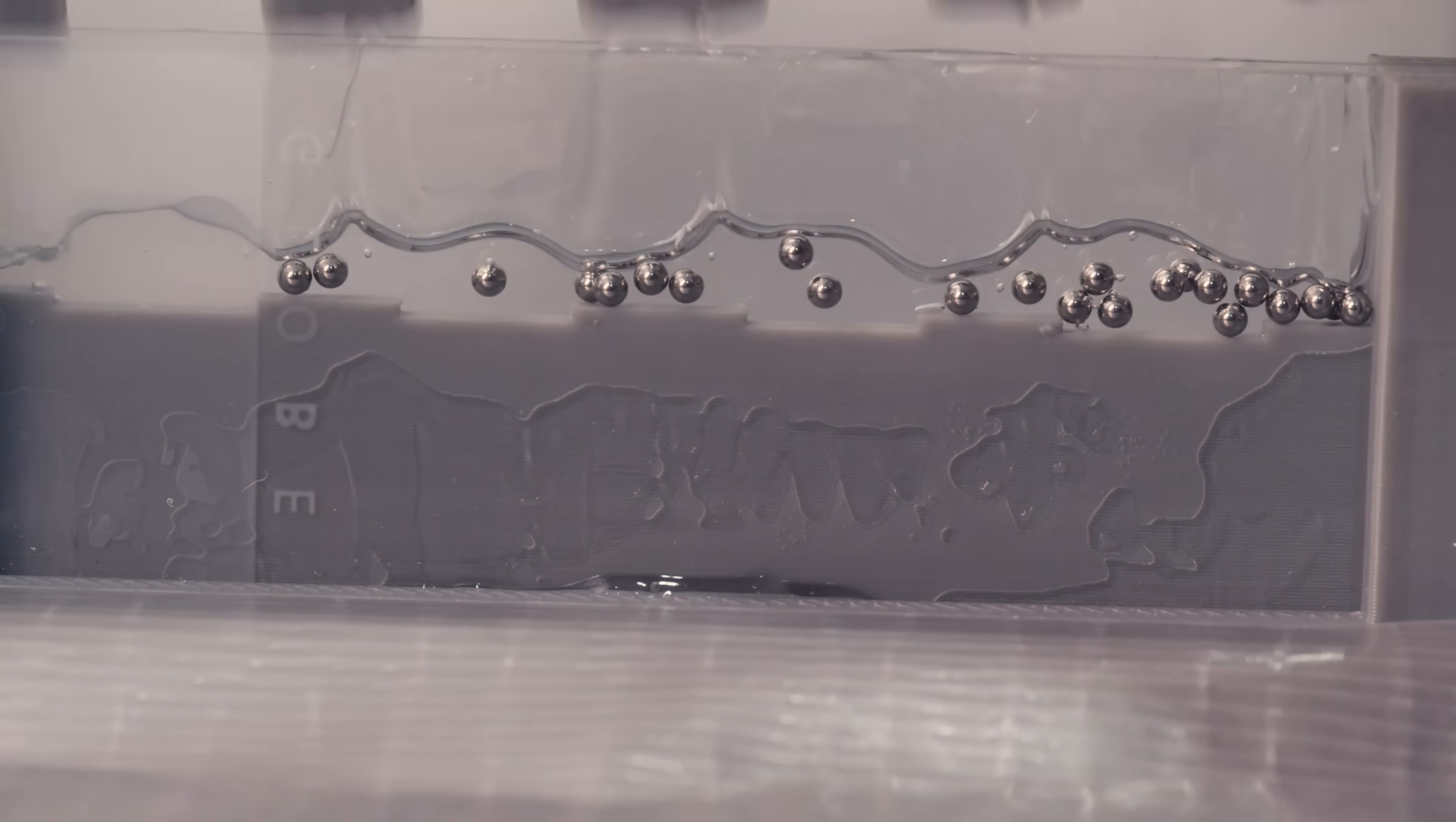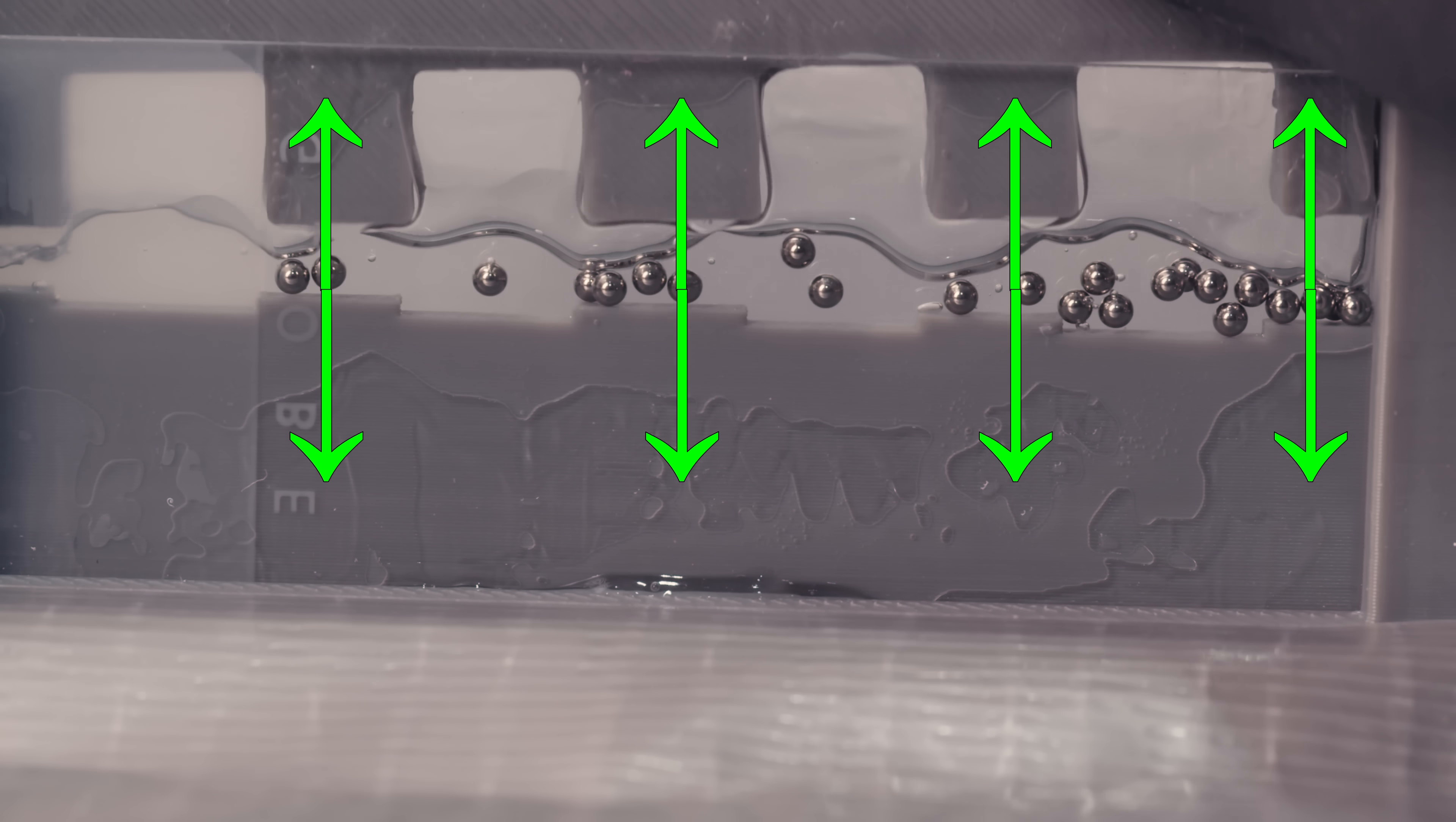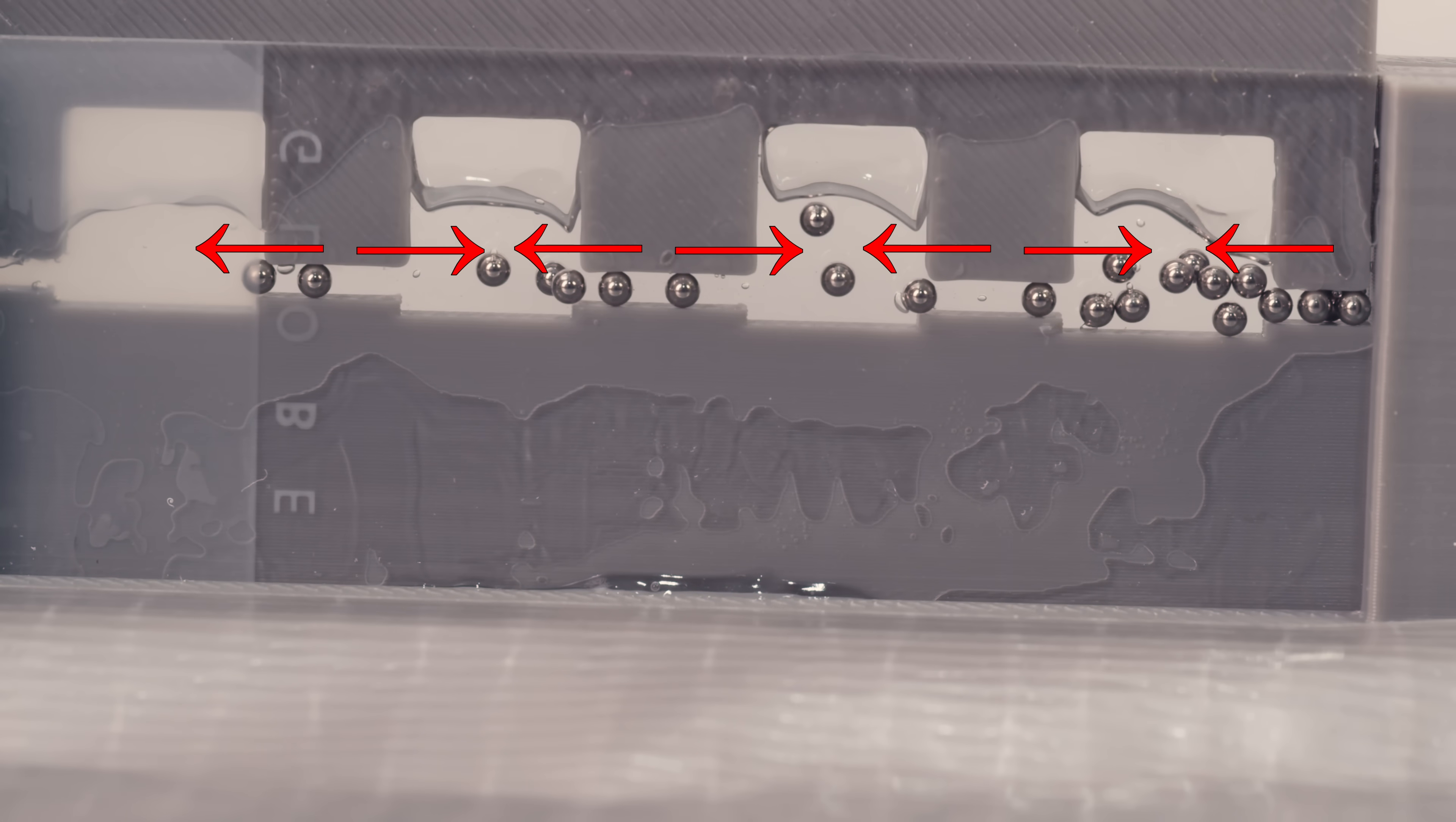That is an anisotropic conducting film. The suspended ball bearings allow electricity to conduct in the z-direction between the two pads, but everywhere else the bearings are not touching and won't conduct in any of the other directions.